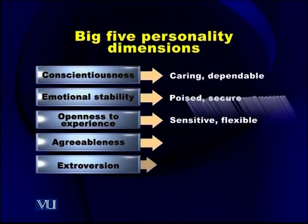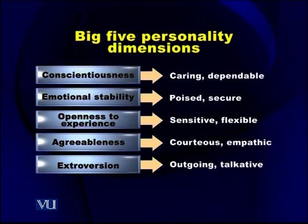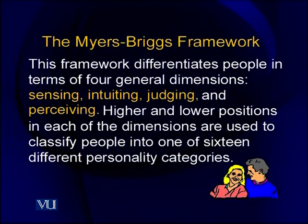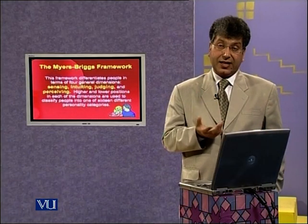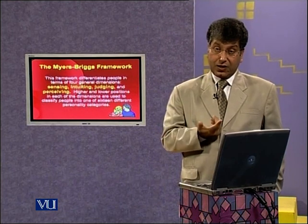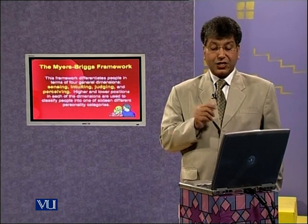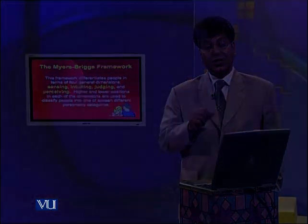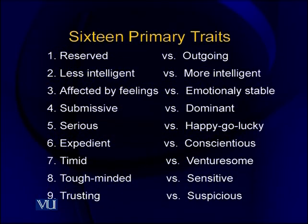The Big Five dimensions include key characteristics such as caring, dependable, secure, sensitive, flexible, courteous, and empathic. In addition to the Big Five, the textbook discusses the Myers-Briggs framework, which identifies 16 different personality categories. Looking at four characteristic dimensions — sensing, intuition, judging, and perceiving — they divided personalities into 16 groups relevant to work and organizations.